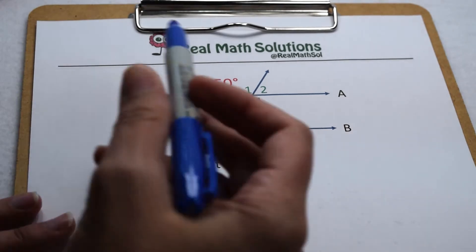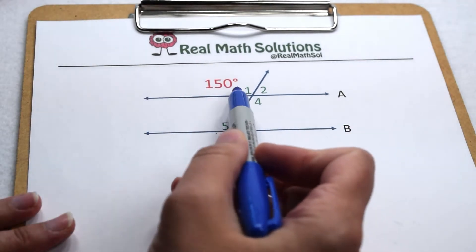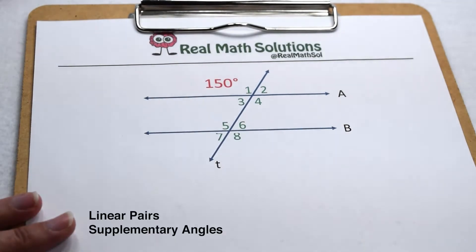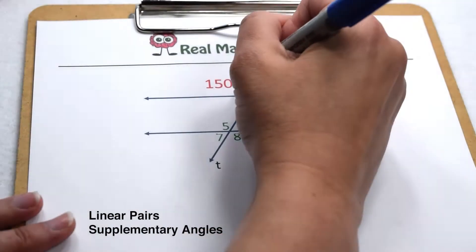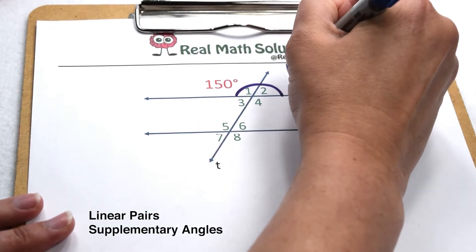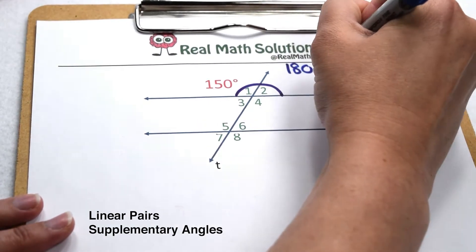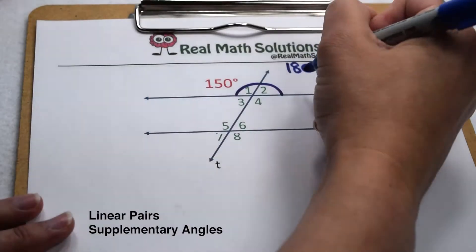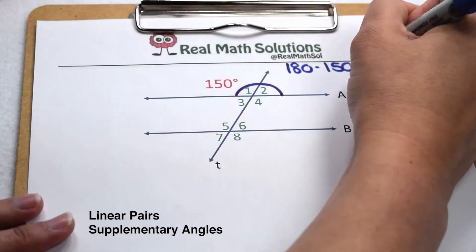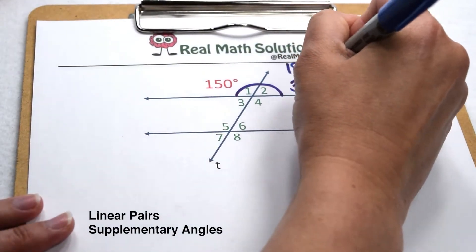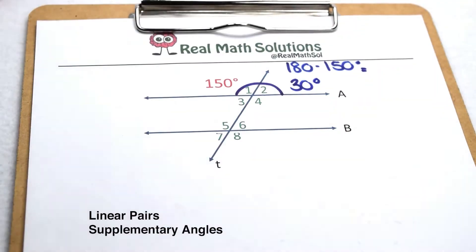Let's start with angle one. Angle one and angle two together form a linear pair, which means they're supplementary, so together they add up to 180 degrees. To find angle two, we can do 180 minus 150, which tells us that angle two is going to be 30 degrees.